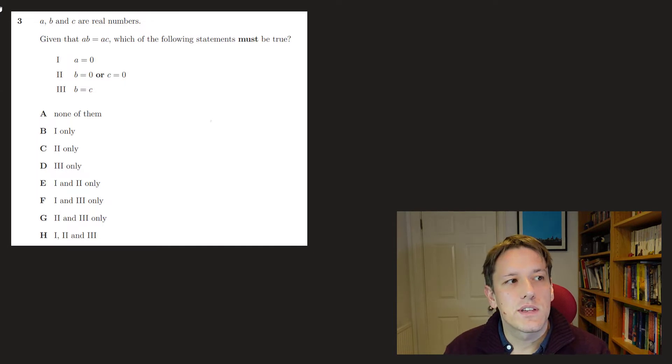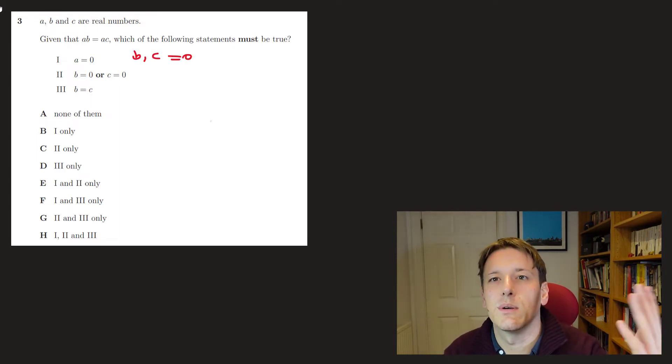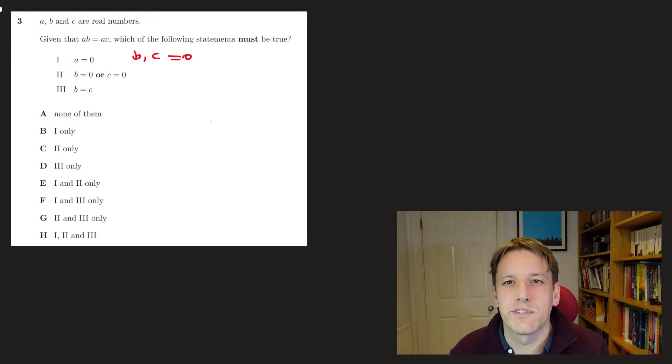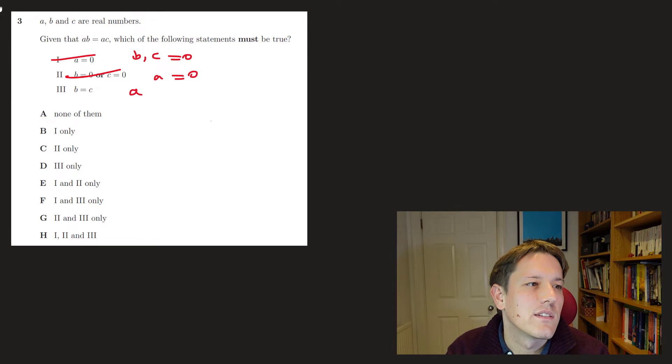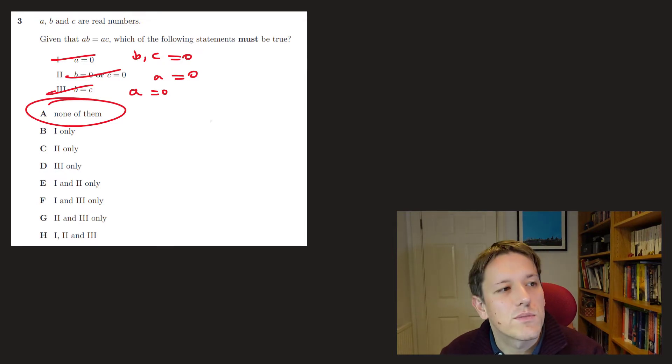In question 3, it says a, b, and c are real numbers. Given that a times b equals a times c, which of the following statements must be true? Well, does a have to be 0? No, not necessarily, because you could have both b and c equal to 0. Then you'd have 0 equals 0. So here I don't have to think too much about all the possible different cases. I've just got to find a way of breaking it here. So 1 doesn't have to be true. Does b or c have to be 0? Well, no, because you could have a equals 0, and then it doesn't matter what b and c are, this would work. And does b have to be c? Well, again, no. If a is 0, then that doesn't work either. So none of them have to be true, and the answer is A, and we can just move on quickly.